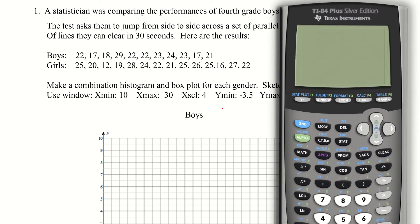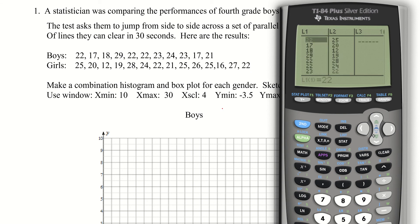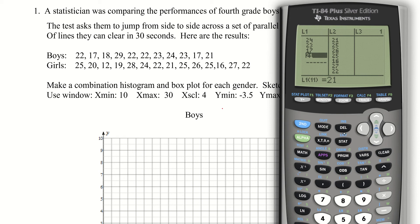The first thing I did is I already entered the data — I didn't want you to sit through that. When I turn on the calculator, you can see list one and list two are both entered. Notice that because this is not bivariate data, I have two different lists. The X and Y values don't have to line up; I can have more X's than Y's. Let's set up the combination histogram and box plot for each gender.